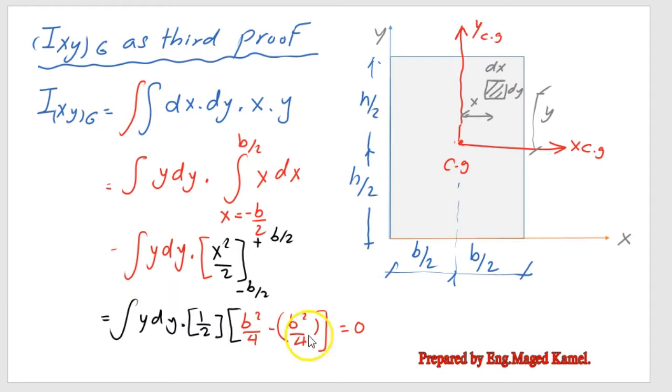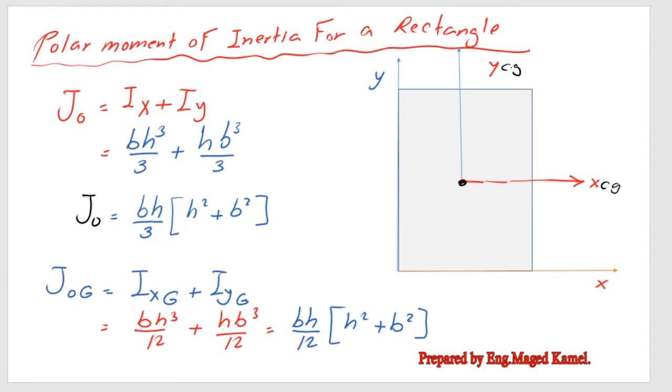Our last item for the rectangular section is the polar moment of inertia for the rectangular section. The J naught, if we are going to estimate at the intersection of X and Y, will be equal to I_X plus I_Y.